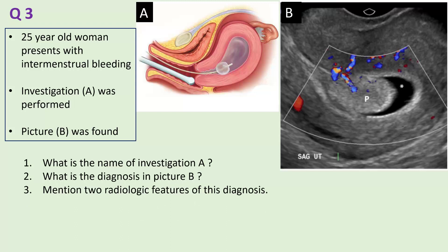In the third question, a 25-year-old woman presents with intermenstrual bleeding. Investigation A was performed and picture B was found. What is the name of investigation A and what is the diagnosis in picture B? Mention two radiological features of this diagnosis.